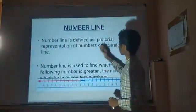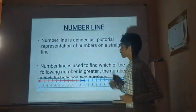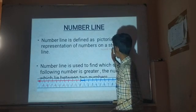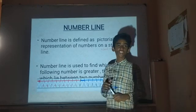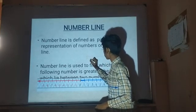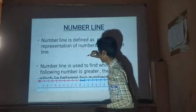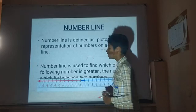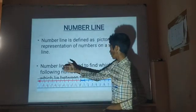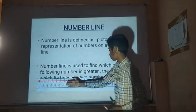The Number Line is a pictorial representation of numbers on a straight line. For natural numbers, it starts from 1 and extends like a ray. For whole numbers, it is the same but includes 0. For integers and ratio numbers, the line extends in both directions. The number line is used to find which number is greater and to find the numbers that lie between two given numbers.